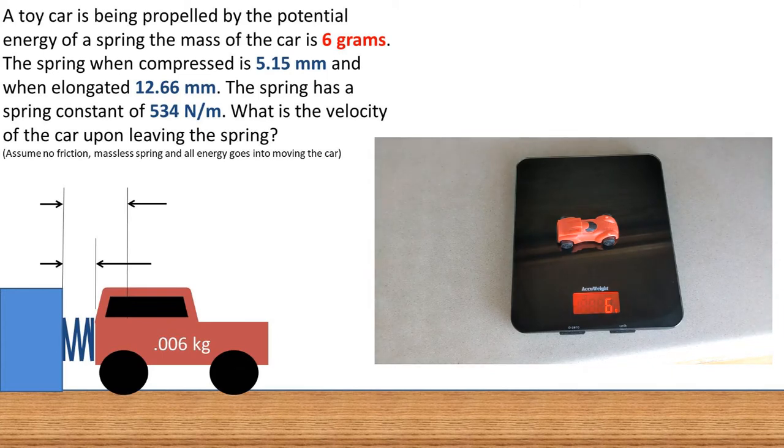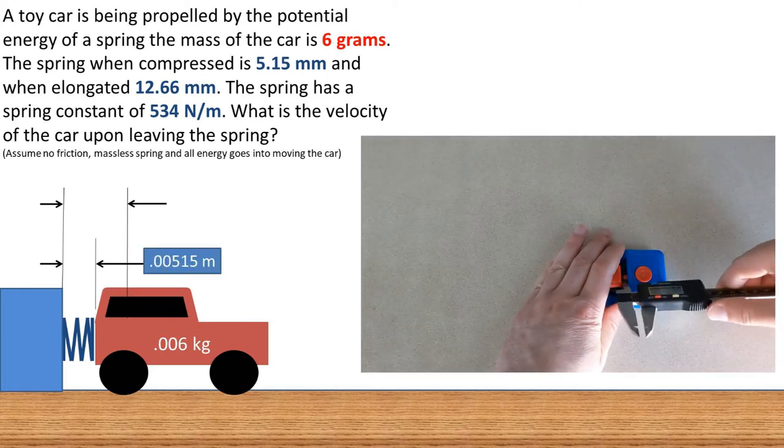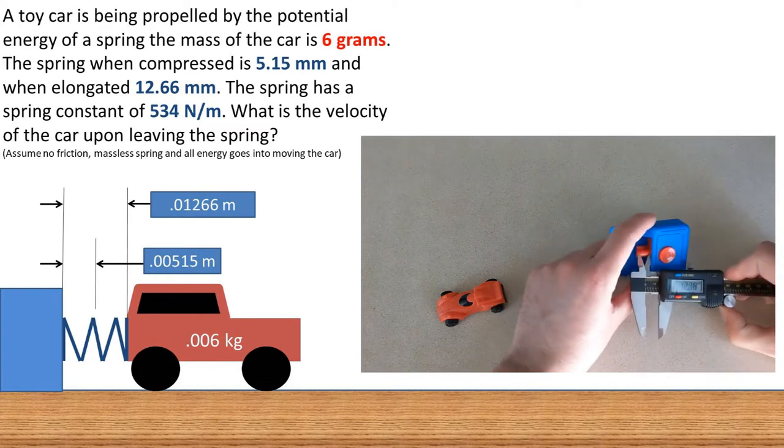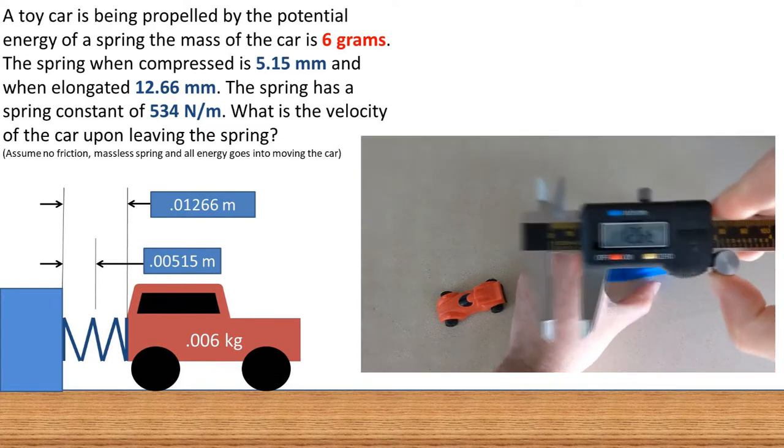The car has a mass of 6 grams. The spring, when compressed, is 5.15 millimeters long, and when the spring is elongated, it is 12.66 millimeters long.